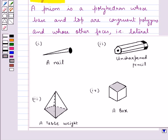Now, the next figure is of a table weight. In this figure, the base and the top are not congruent polygons and the lateral faces are also not parallelogram in shape. Therefore, this is also not a prism.